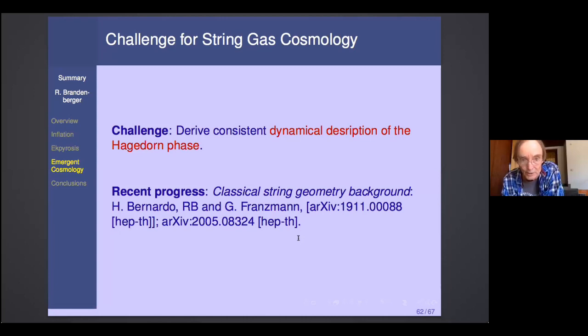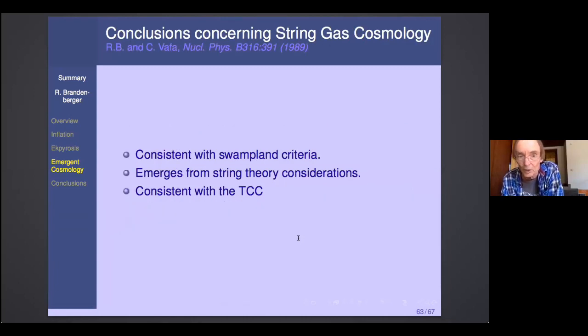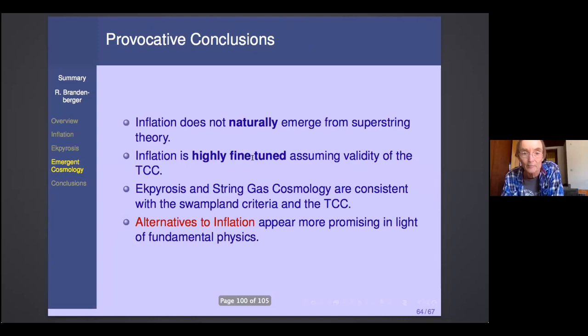So, now I'll come to the conclusions. First of all, provocative conclusions. I've shown you that string gas cosmology is consistent with the TCC and it's consistent with the swampland criteria because it comes from string theory. So, my provocative conclusion is that based on fundamental physics, it looks like alternatives to inflation are more promising than inflation for the reasons that I illustrated up here.